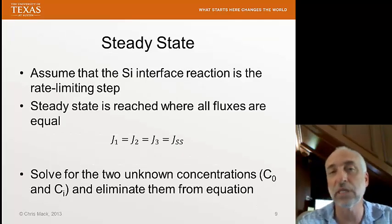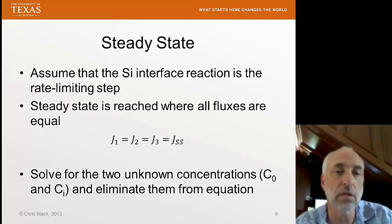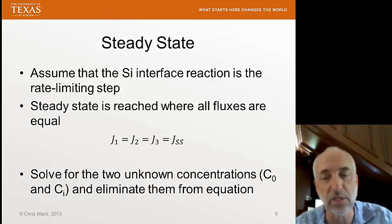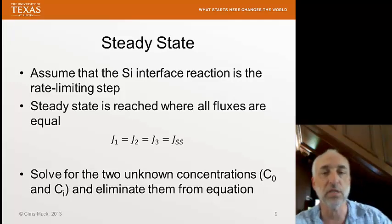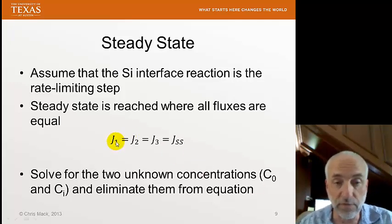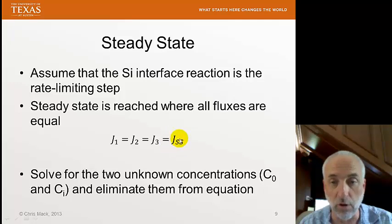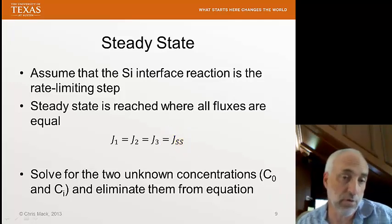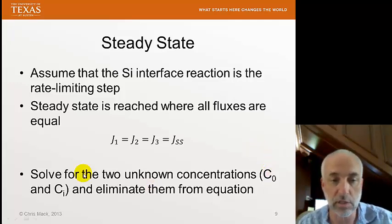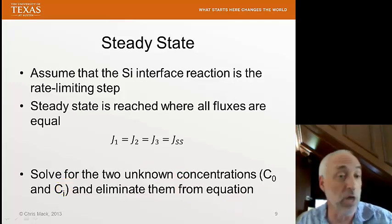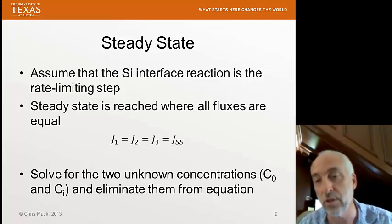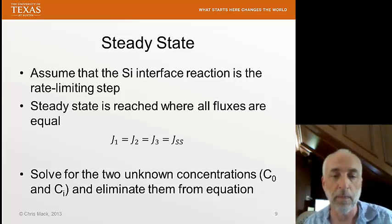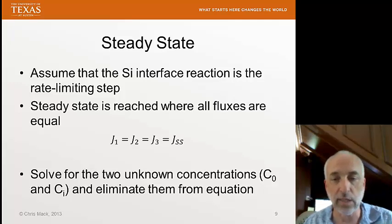Very soon after the reaction begins, a steady state is reached. We assume the reaction at the silicon interface is the rate-limiting step, so the rate at which oxygen diffuses through the gas and through the oxide film reaches steady state with the slow reaction step, supplying just enough oxygen to be consumed. Therefore, all fluxes are equal to each other — the steady-state flux J-SS. We solve for the two unknown concentrations C0 and Ci and eliminate them. The bulk concentration C-G is controlled by us, and with the steady-state equations we write down one final flux equation.